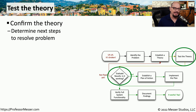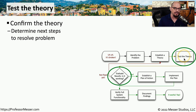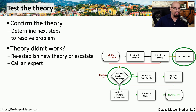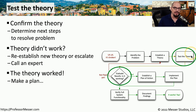We can now test our theories one by one. If we check the power cord and it's already plugged in and getting power but we're still having the problem, we know the power cord is not the cause and we move to the next theory on our list — for example, checking the network connection. If we go through all of our theories and still can't identify the root cause, it might be time to bring in a third party or an expert. Or it may be that one of the theories resolves the problem, in which case we can move to the next step: creating a plan of action.